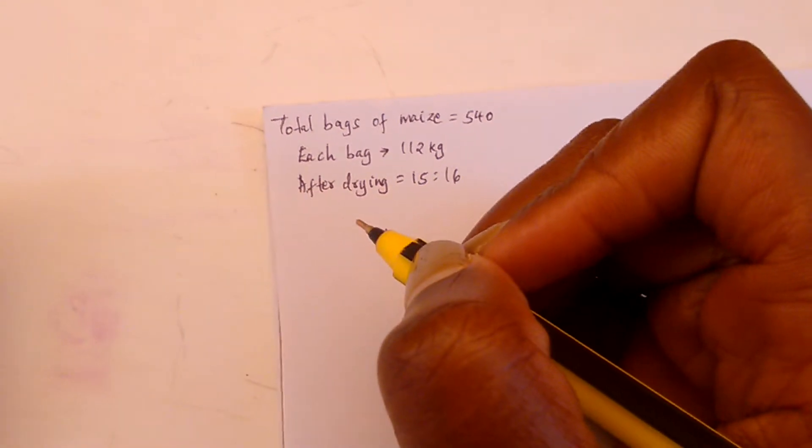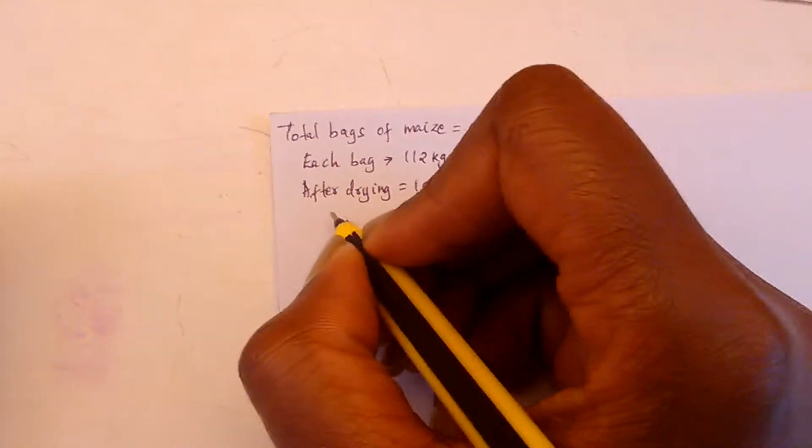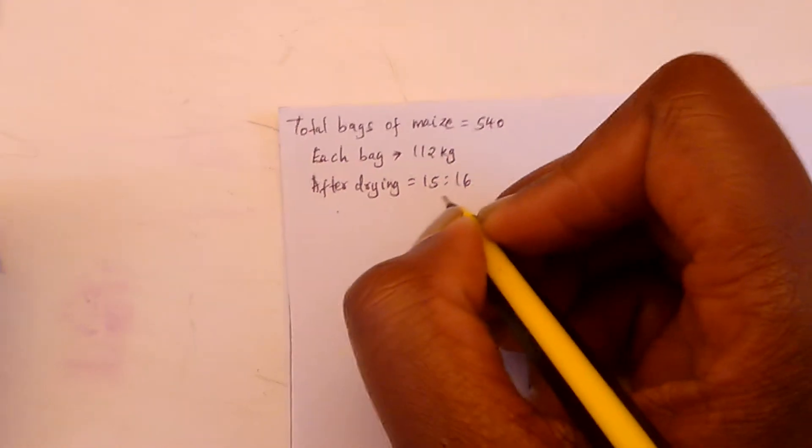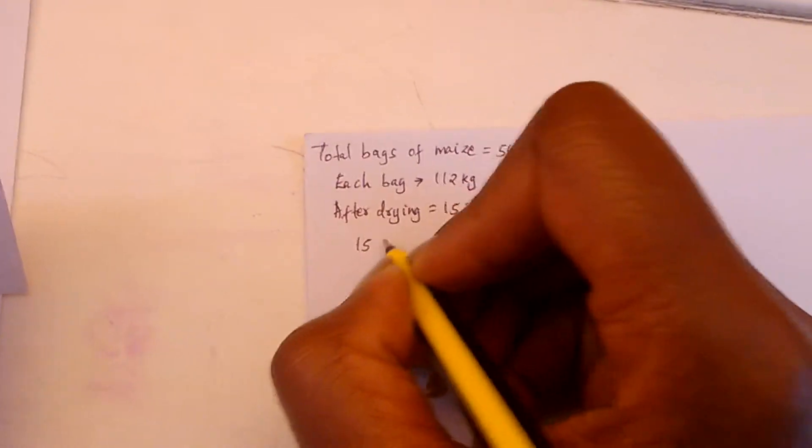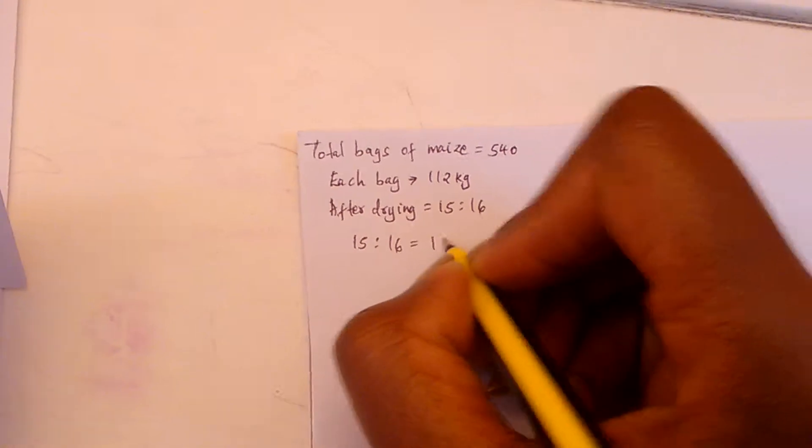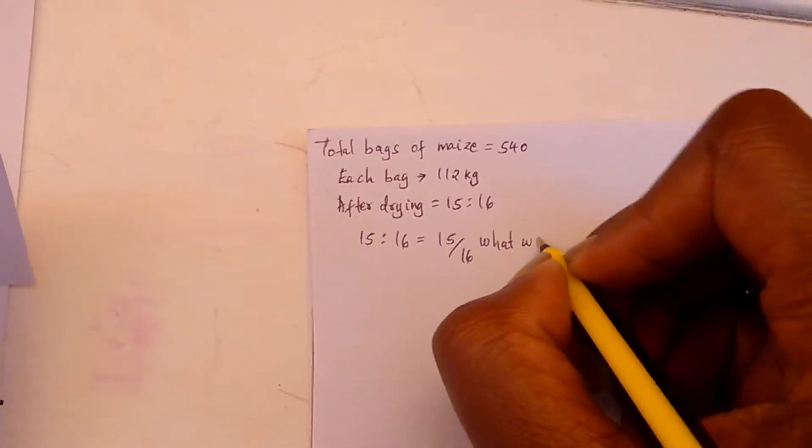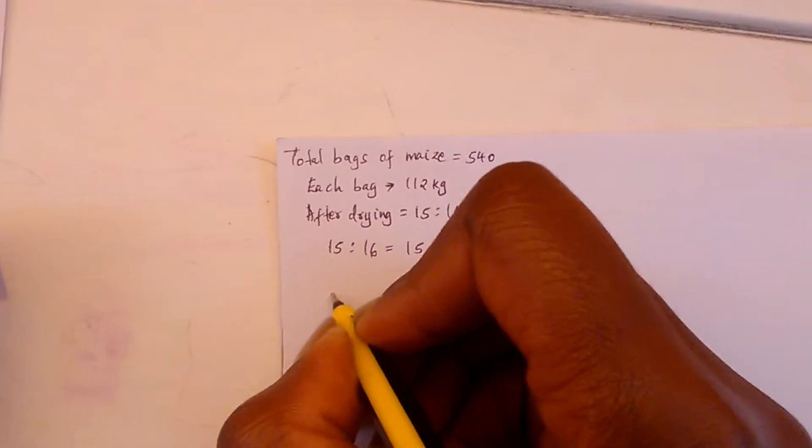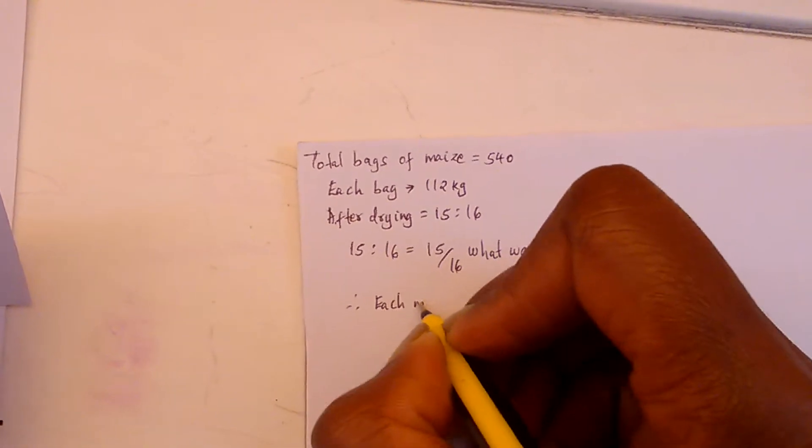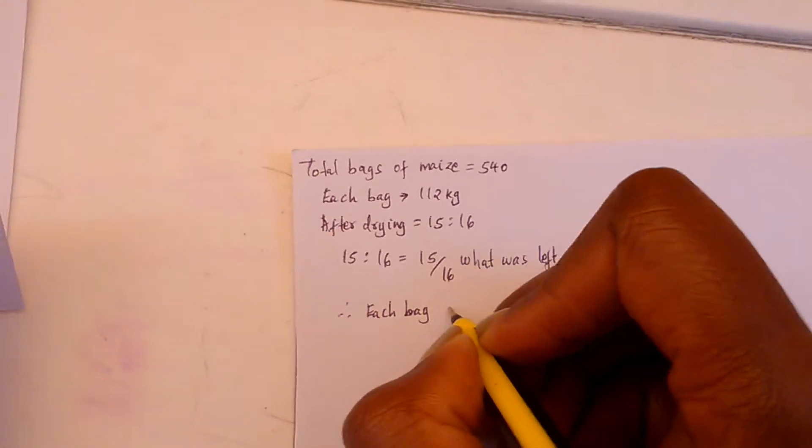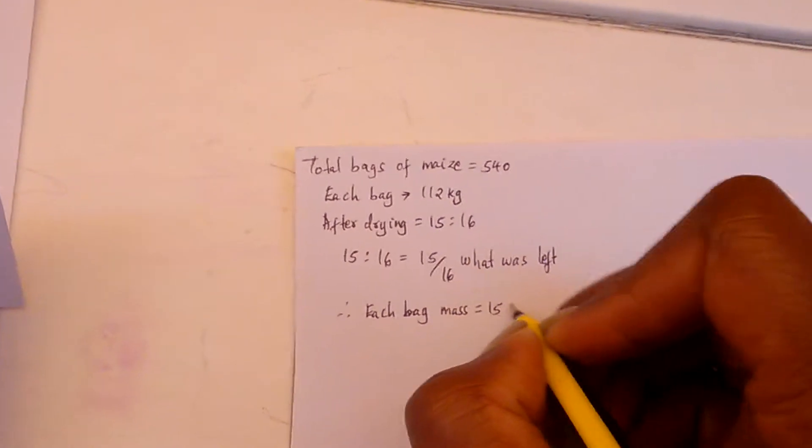Part A requests us to calculate the total mass lost. We can express the ratio 15:16 as a fraction, 15/16. This represents what was left, so each bag's new mass was 15/16 × 112.